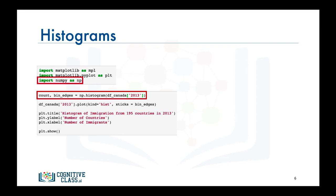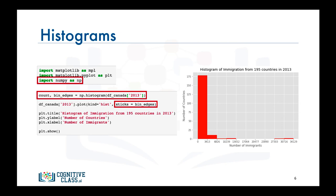We then pass these bin edges as an additional parameter in our plot function to generate the histogram. And there you go, a nice looking histogram whose bin edges are aligned with the tick marks on the horizontal axis.